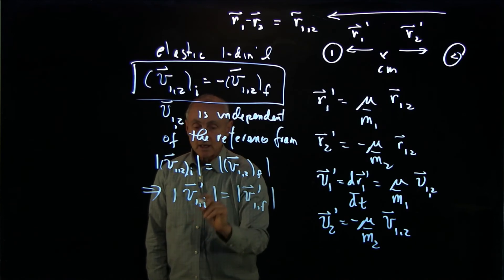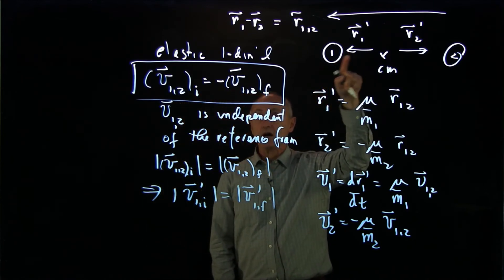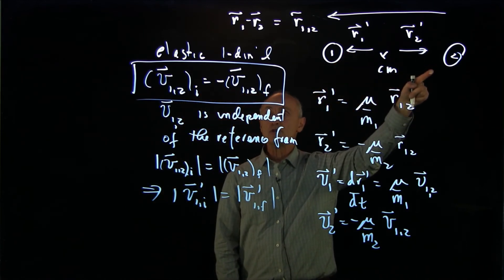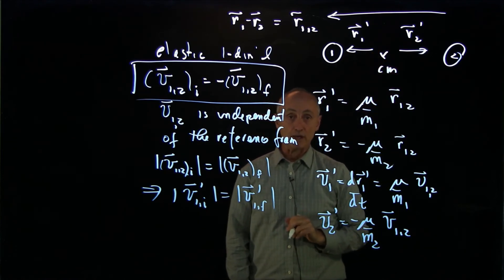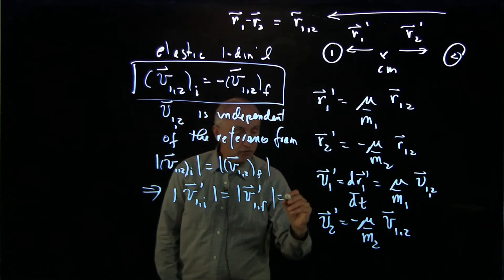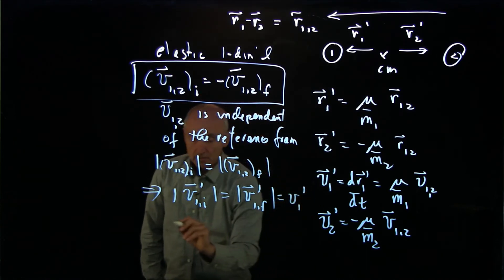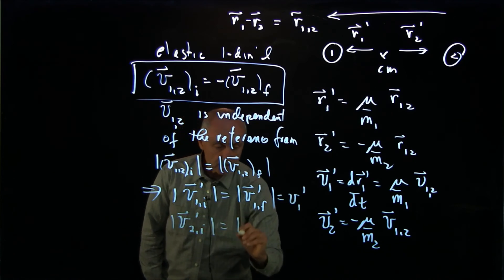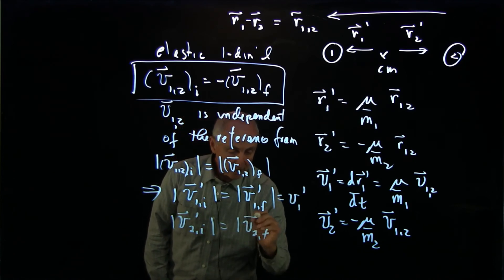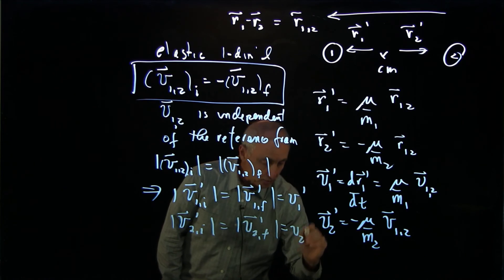So the quantity, the speed of objects 1 and object 2 in an elastic collision in the center of mass reference frame do not change magnitude. We can call this quantity v1 prime. And likewise, v2 prime initial is equal to v2 prime final, v2 prime.